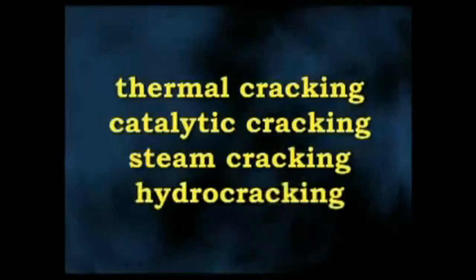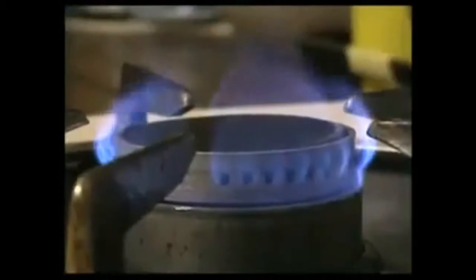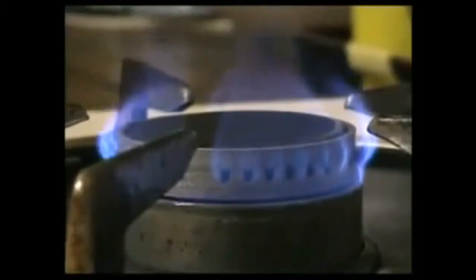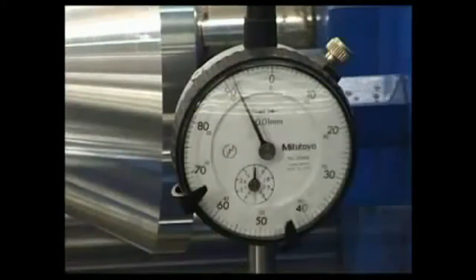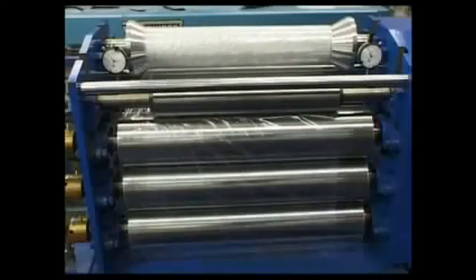The major forms of cracking are thermal cracking, catalytic or cat cracking, steam cracking and hydrocracking. Because they differ in reaction conditions, the products of each type of cracking will vary. Most produce a mixture of saturated and unsaturated hydrocarbons.